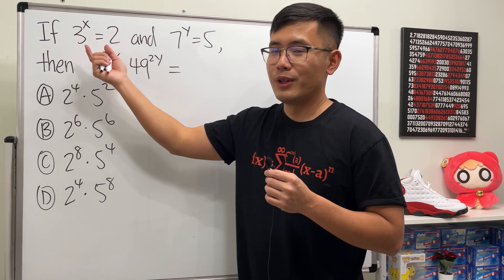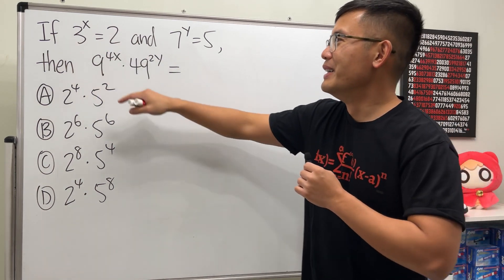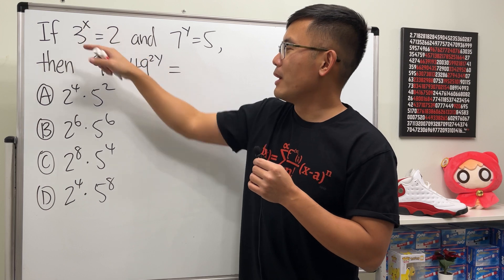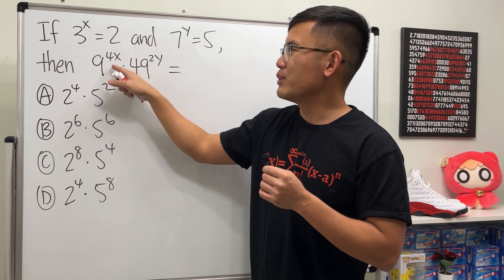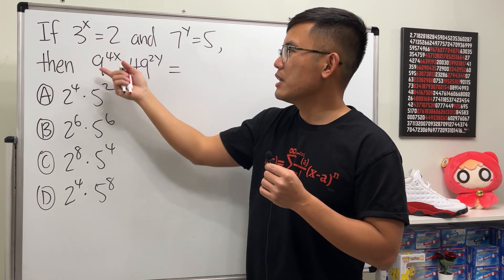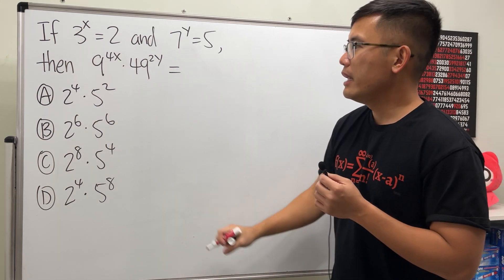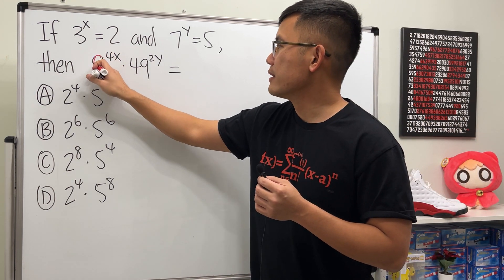Okay, let's see. You can try to use logarithm if you would like, and I'll leave that to you. But when we have 3 to the x power and see that this right here is 9 to the 4x power, if we can somehow draw a connection, that would be much easier. And in fact we could.